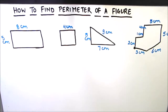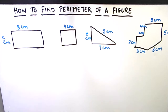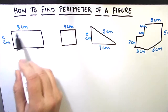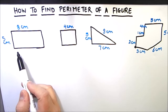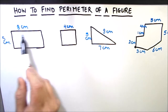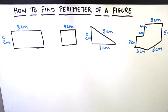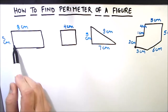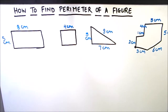Hello everyone. In this video we are going to learn how to find the perimeter of a particular figure. First of all, let us know what perimeter is. Perimeter is the measurement of the length around a figure. For example, if you want to make a fence around a rectangular field, you need to know how much is the measure of the length around it — that is called the perimeter.